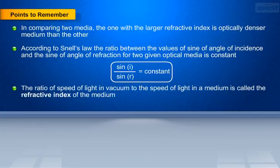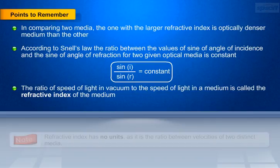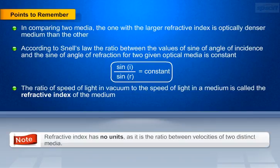The ratio of speed of light in vacuum to the speed of light in a medium is called the refractive index of the medium. Please note that refractive index has no units as it is the ratio between velocities of two different media.